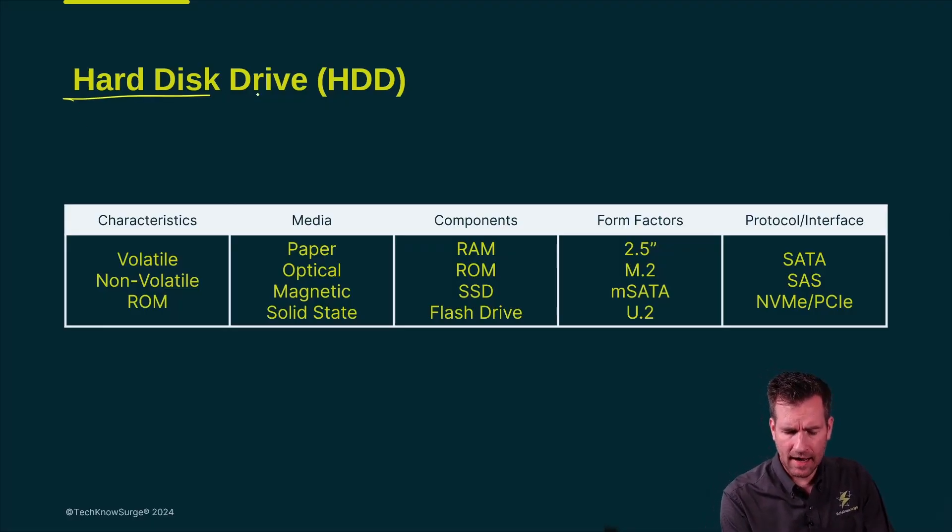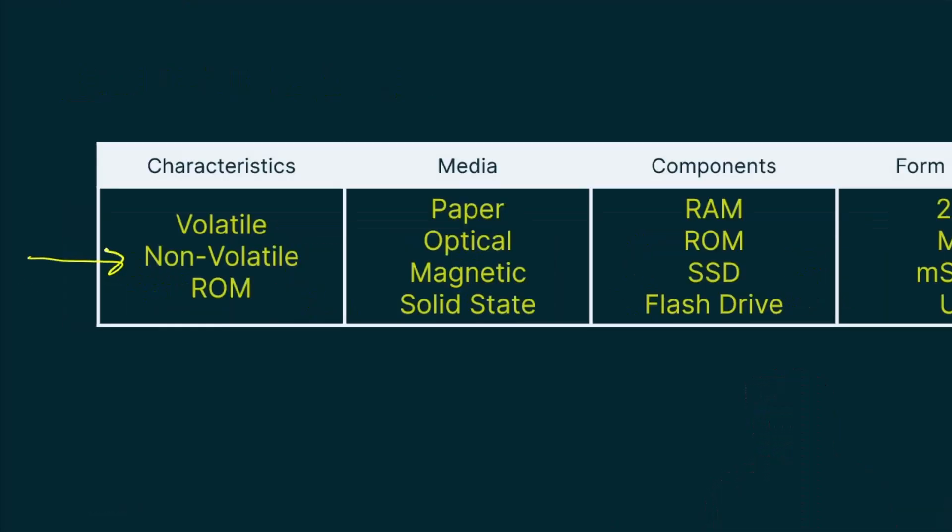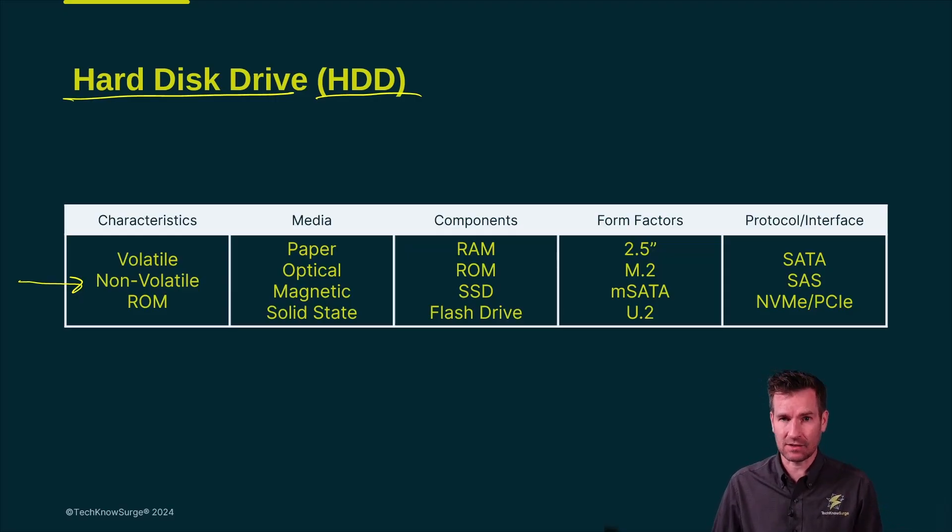A hard disk drive can also be called an HDD. A hard disk drive would be non-volatile memory, that is, we can store data on this for a long period of time. The machine can be shut down and that data is still stored.